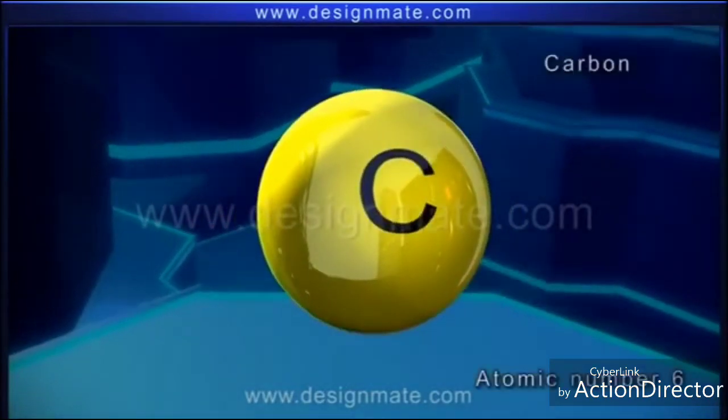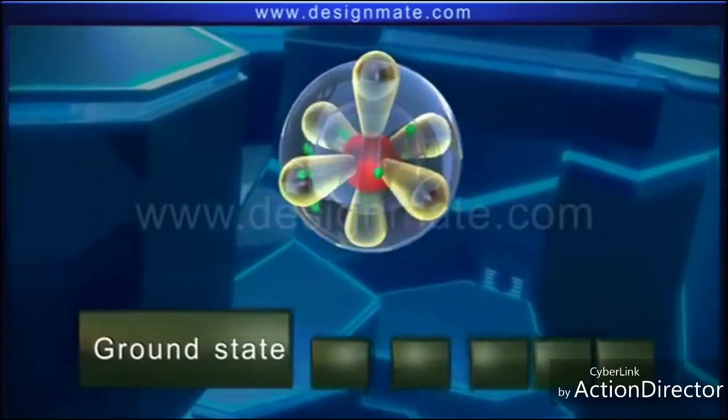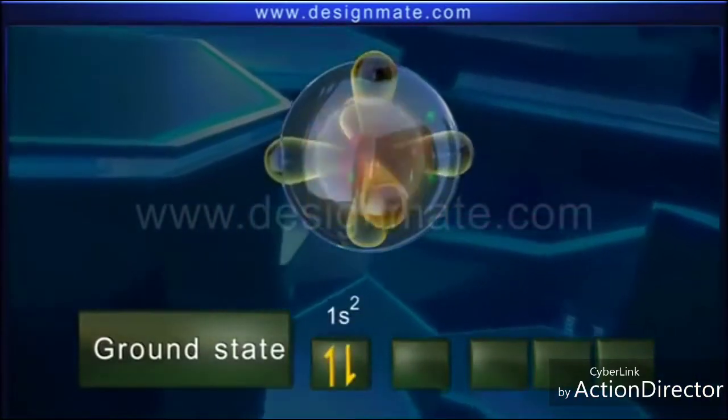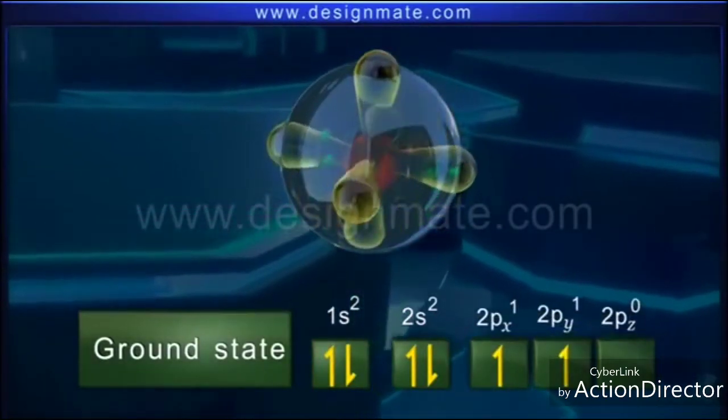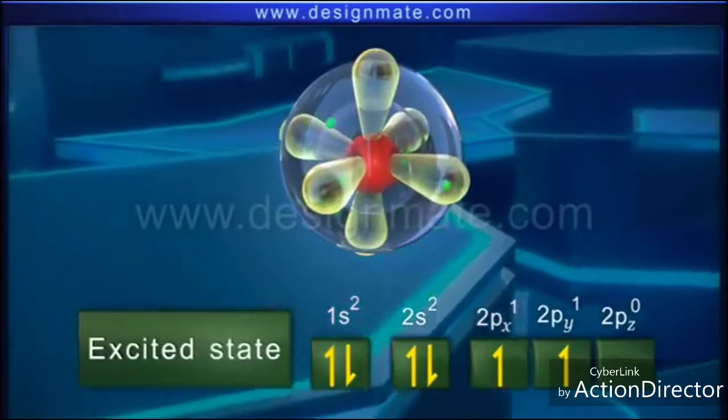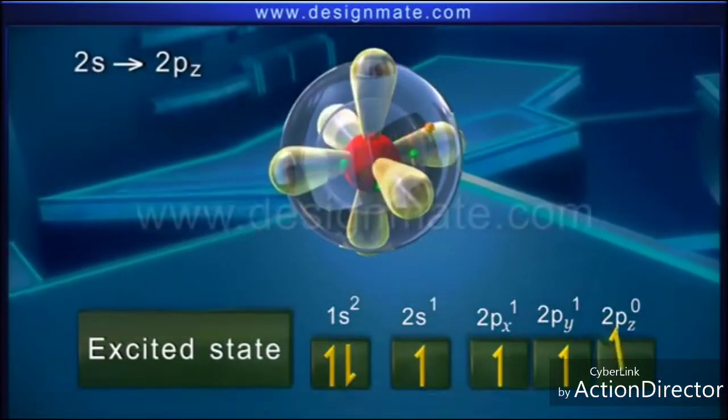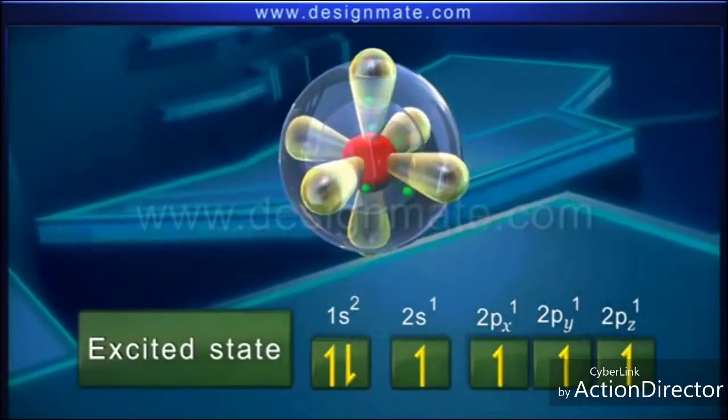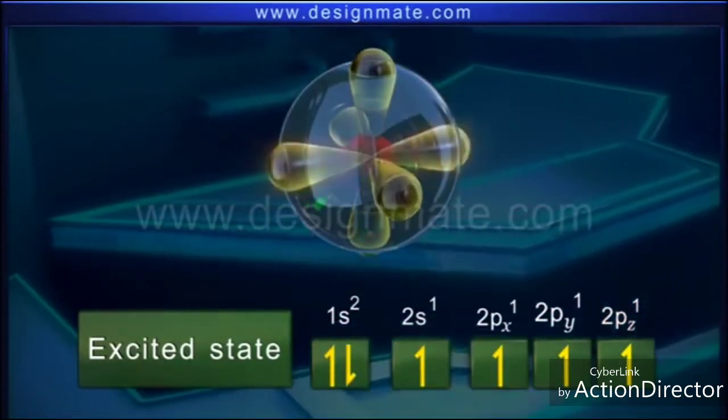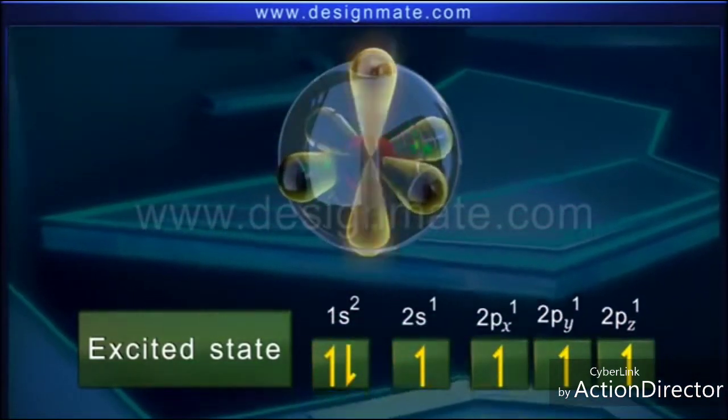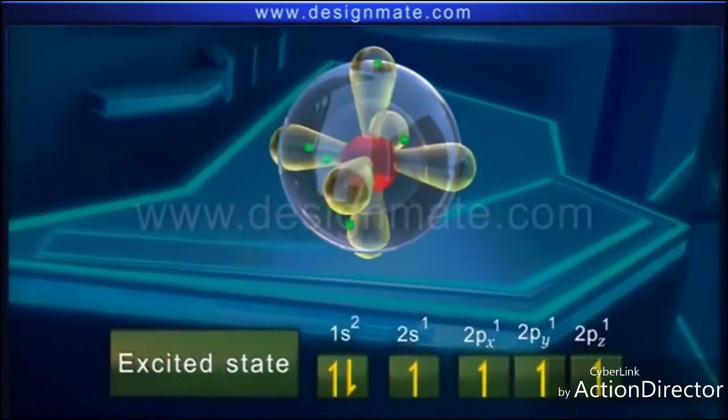Now consider a carbon atom having atomic number six. In the ground state, its electronic configuration is 1s2 2s2 2px1 2py1 2pz0. On excitation, an electron jumps from the 2s orbital to the 2pz orbital, resulting in an electronic configuration of 1s2 2s1 2px1 2py1 2pz1. In order to form four sigma bonds with other atoms, these orbitals undergo sp3 hybridization.